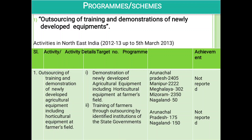Programs and schemes for the development of equipment activity in North East India: outsourcing of training and demonstration of newly developed agriculture equipment including horticulture equipment at farmers' field. Training of farmers through outsourcing by identified institutions of the state governments. States covered include Arunachal Pradesh, Manipur, Meghalaya, Mizoram, Nagaland. The number of schemes provided: Arunachal Pradesh 2,405 and Mizoram 2,350. Achievement is not reported till date for other states.